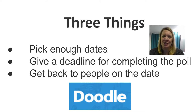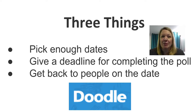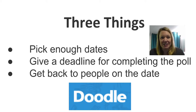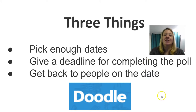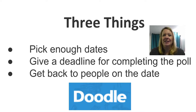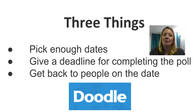You also want to give a deadline for completing the poll. Give people enough time when you send the link out — ideally a few days, maybe a week — but be very definitive with that deadline. Say, please complete this poll by the end of the day next Friday, and give a date. You also want to get back to people usually a day or two after that deadline. You don't want to leave people hanging because by that time, dates people might have been open might not be open anymore.